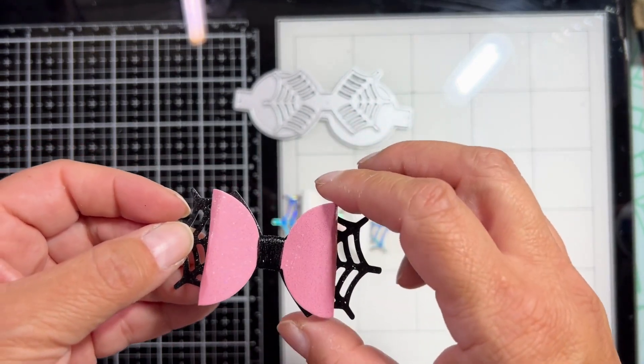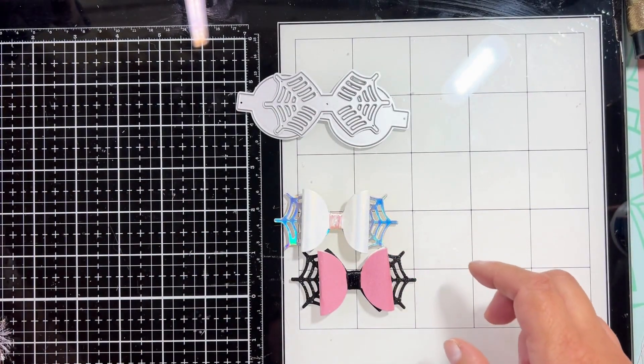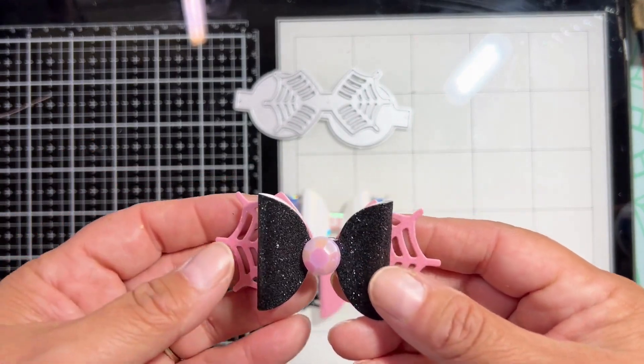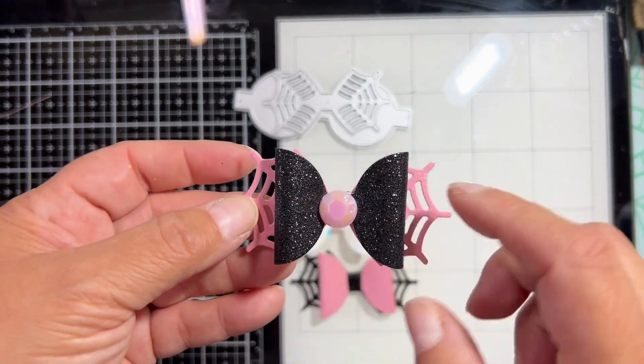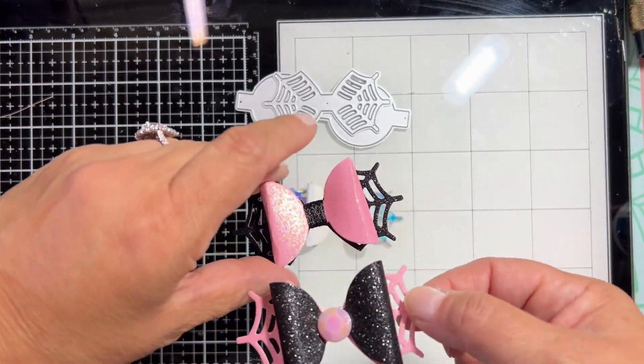And again it has that really pretty pink paper glitter paper and then the black glitter paper in the back. And then here is another one. I decided for this one to go ahead and put a gem in the middle and then I just switched it here.